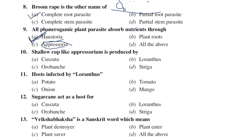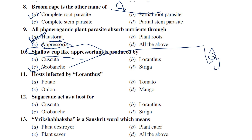A shallow cup-like oppressorium is especially produced by Orobanche (Warabanki). Warabanki most notably infects tobacco. It produces a shallow cup-like oppressorium. Another special feature is snap dragon-like flowers. So shallow cup-like oppressorium and snap dragon-like flowers are both produced by Orobanche (Warabanki).